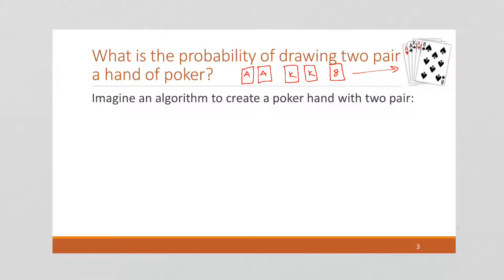Now, the best way to figure this out is to think of an algorithm to create this hand. If you were able to pick your own cards, and you wanted to pick a two pair, how would you do it? Well, first, we're going to want to pick what the denominations are. So here I chose aces and kings.